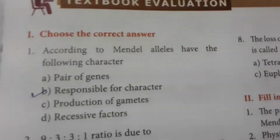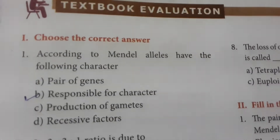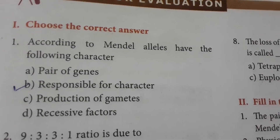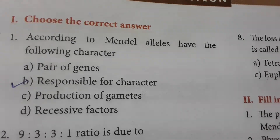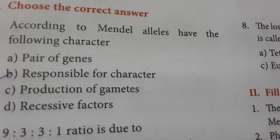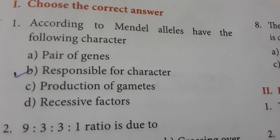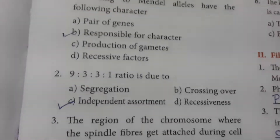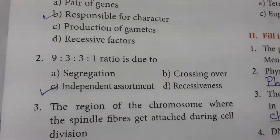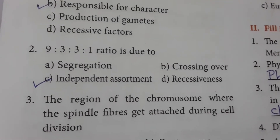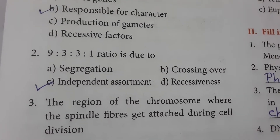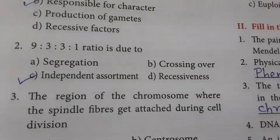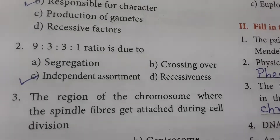Let's see the book back exercises from this lesson. According to Mendel, alleles have the following characters — they are responsible for character. This is the correct option. The next one is that the 9:3:3:1 ratio is due to independent assortment.